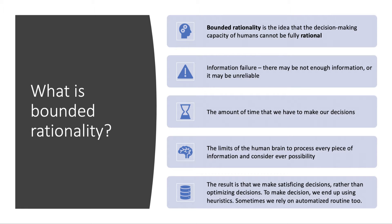The limits of the human brain to process, calibrate, and calculate every single piece of information are clearly limited — we can't consider every possibility, particularly in a world of enormous choice. So in a world of bounded rationality, the result is we often make what's called satisficing decisions rather than maximising, optimising decisions. We end up using heuristics — rules of thumb — and often we rely on automated routine, default choices.